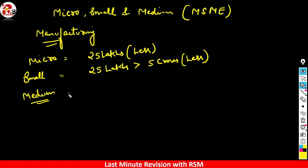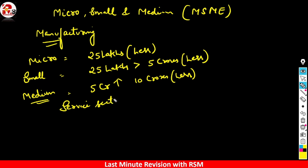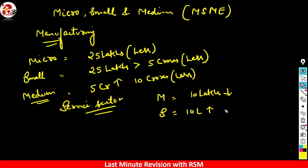So for the manufacturing sector, remember three bifurcations: micro (below 25 lakhs), small (25 lakhs to 5 crore), and medium (5 crore to 10 crore). The service sector has slightly different and lower thresholds.